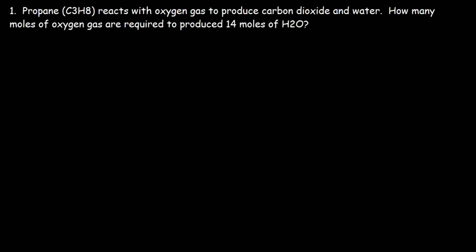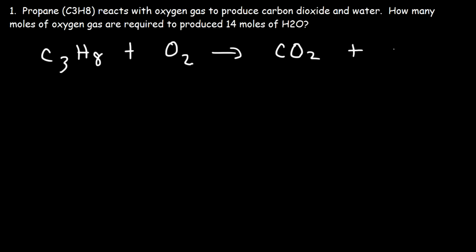Now let's work through this example: propane reacts with oxygen gas to produce carbon dioxide and water. The question is: how many moles of oxygen gas are required to produce 14 moles of water? The first thing we need to do is write a balanced chemical reaction. Propane is C₃H₈, and it reacts with oxygen gas, which is diatomic O₂. Carbon dioxide is CO₂ and water is H₂O.